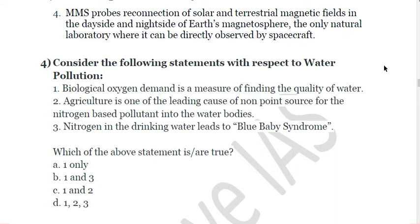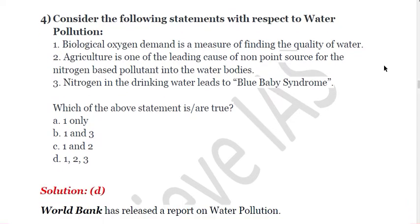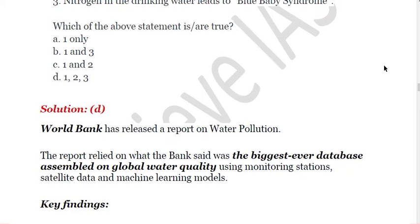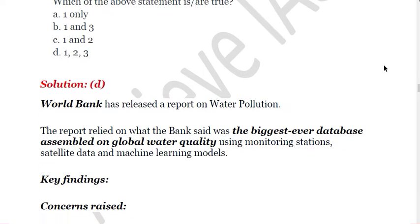Biological oxygen demand measures organic pollution in water, with a limit of 8 milligrams per liter. Agriculture is a leading cause because it uses nitrogen-based fertilizers which, through surface runoff, move nitrogen into water bodies causing harmful algal blooms and high biological oxygen demand. Nitrogen in drinking water leads to blue baby syndrome, which is also correct. Recently the World Bank released a report on water pollution, claiming it is the biggest-ever database assembled on global water quality.